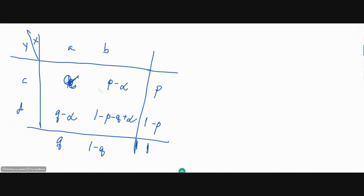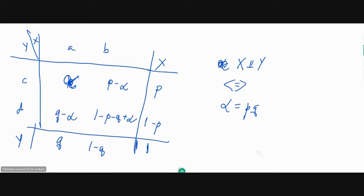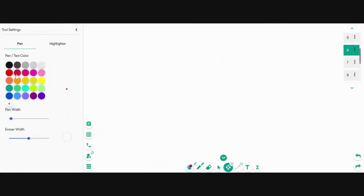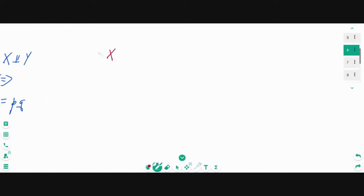Let's understand what independence means algebraically here. X is independent of Y if and only if alpha equals PQ — the product of the marginals. So what we have to show algebraically is that the correlation of X and Y is equal to zero if and only if alpha is equal to PQ. That's what we need to prove now.